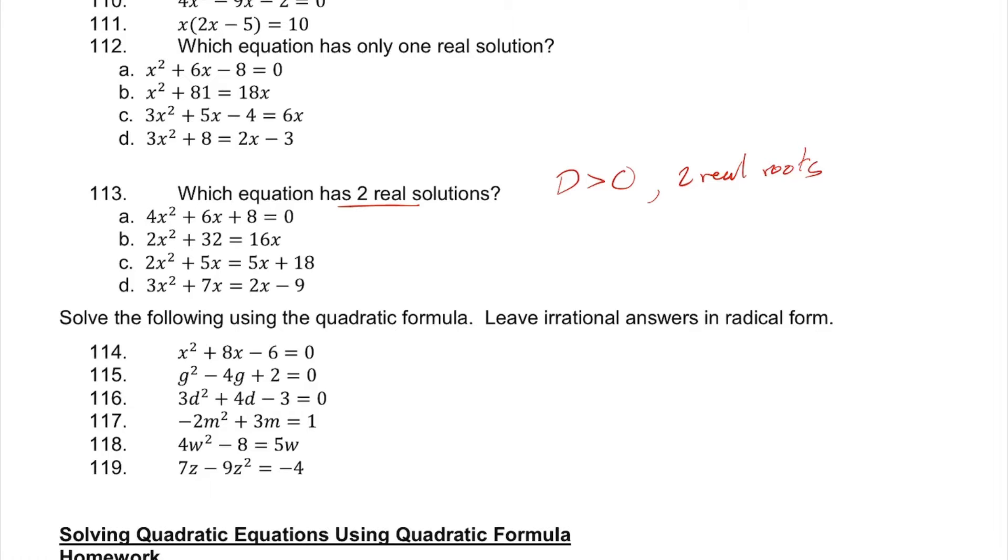We're going to look at the discriminant in each scenario, which is b squared minus 4ac. In each equation, we're going to rewrite it in standard form. The first one is already written in standard form.